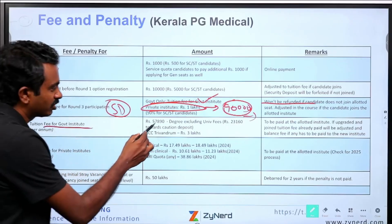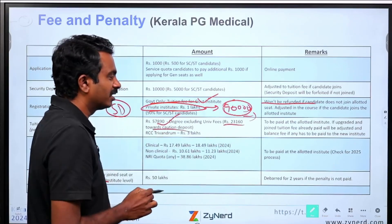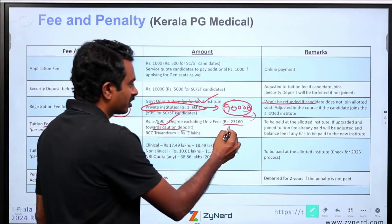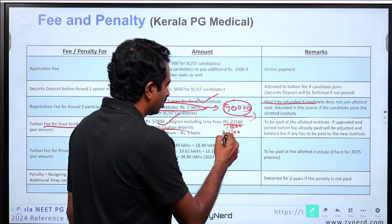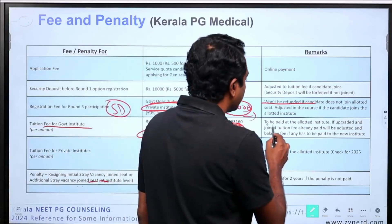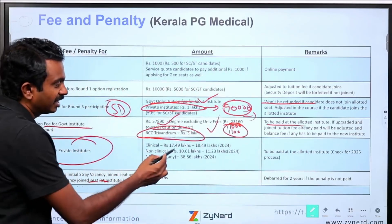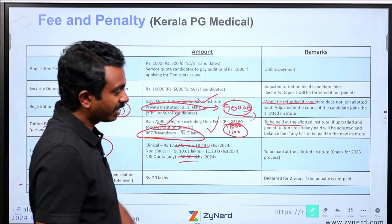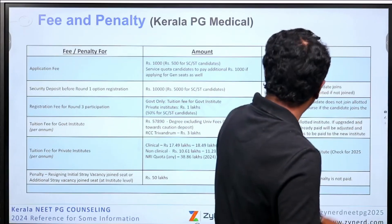Tuition fee for government institutes will be 57,890 plus 23,160 towards caution deposit and annual fee — this includes a caution deposit of around 11,000 and an annual fee of around 11,000. RCC Trivandrum has a fee of around 3 lakhs. For private institutes, NRI quota is around 38 lakhs, and clinical seats are between 17 to 19 lakhs approximately. These figures are for 2024 and may change.